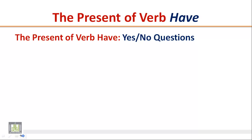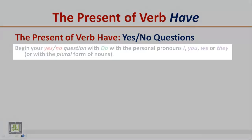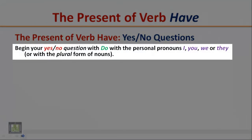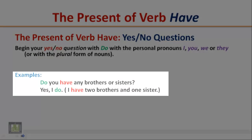The present of verb 'have' — yes/no questions. Begin your yes/no question with 'do' with the personal pronouns I, you, we, or they, or with the plural form of nouns. Example: Do you have any brothers or sisters? Yes, I do. I have two brothers and one sister.